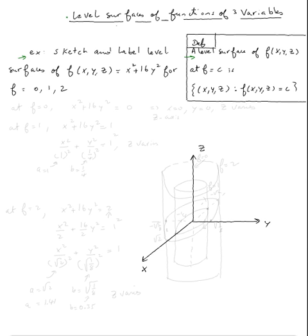Looking at the definition, level surface of f(x, y, z) at f = c is the set of all (x, y, z) such that f(x, y, z) = c.